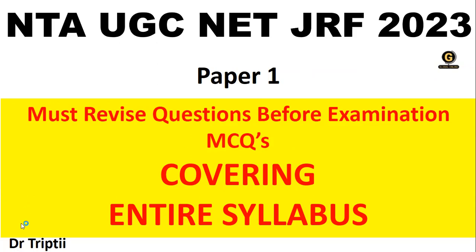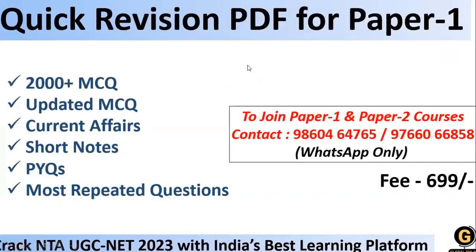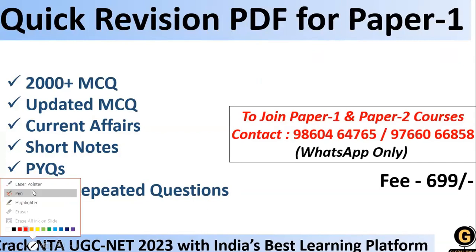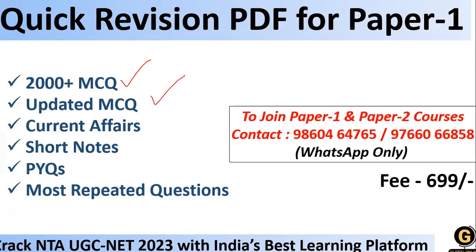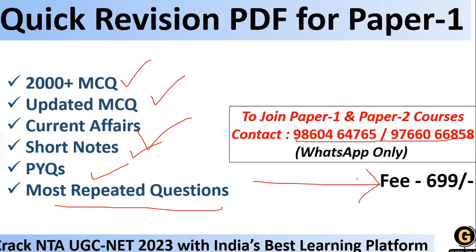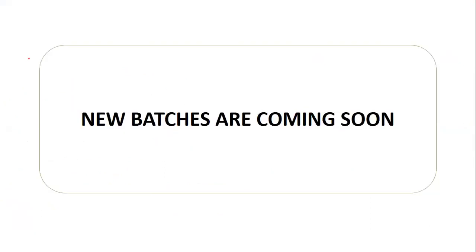Before we go ahead, an important announcement regarding the quick revision PDF for Paper One. This quick revision PDF will consist of 2000 plus MCQs, updated MCQs, current affairs, short notes, previous year questions, and most repeated questions. You can get in touch with us on the given WhatsApp number. The package is 699 rupees and is very important for last-minute revision.